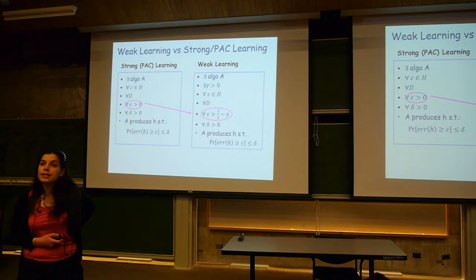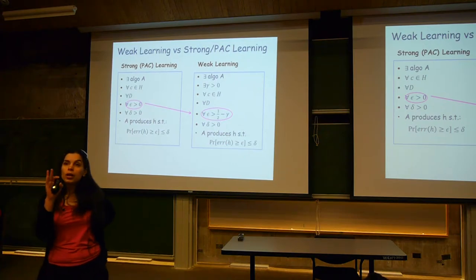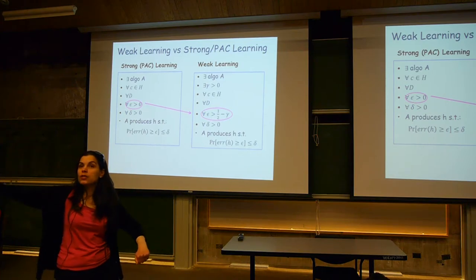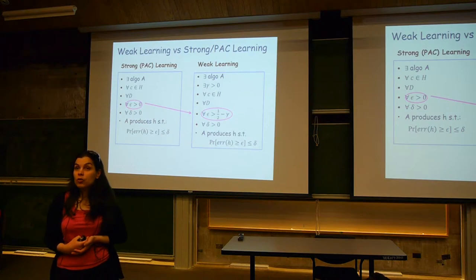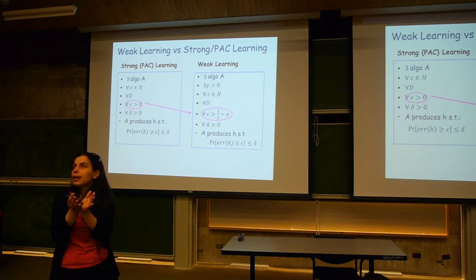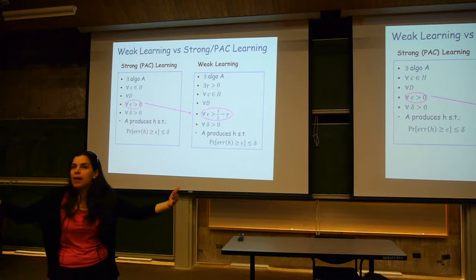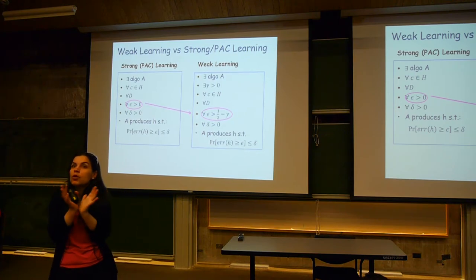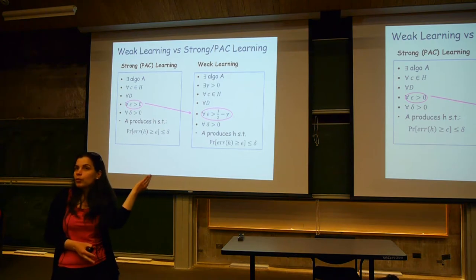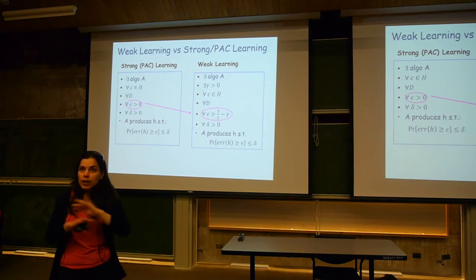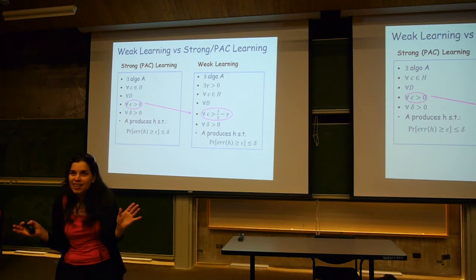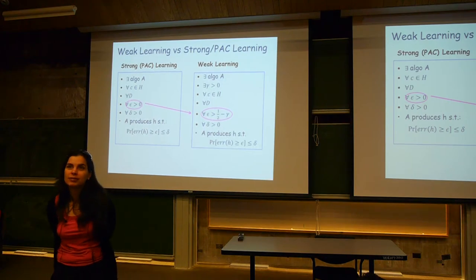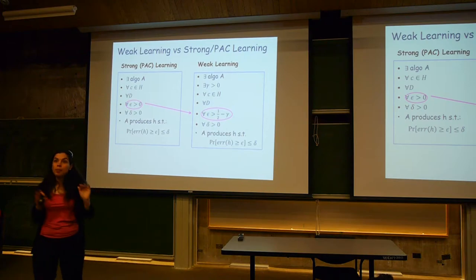For today's class I'm going to focus on binary classification and assume that weak learners produce labels of either minus one or plus one. There are extensions of boosting algorithms that can handle confidence-valued outputs or multi-class classification, but for simplicity today I'll focus on binary classification.